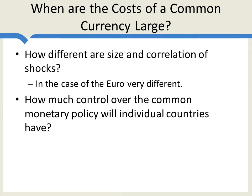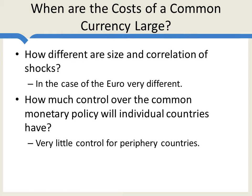So given that the shocks are going to be very different, how much control over the common monetary policy will individual countries have? In the case of the Euro, the answer was very little control for the periphery countries — Germany was likely to dominate. In part, this was by design: Germany had the best monetary policy to begin with, so everybody wanted it to dominate. But because of that, the European Central Bank was built from the beginning to respond less to shocks in the periphery countries. That has begun to change since the shocks have been so large and important.